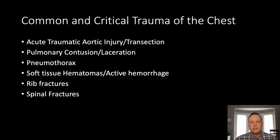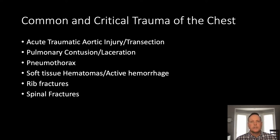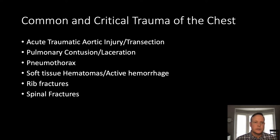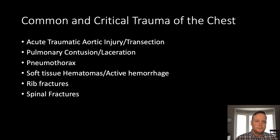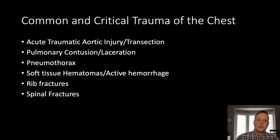For assessing the chest for trauma, it is essentially an anatomic review with an expectation that any structure in the chest could be injured. So you have to have a high level of clinical suspicion and really be meticulous in your anatomic survey. I'm going to be showing some of the more common manifestations of trauma, as well as some critical injuries: acute traumatic aortic injury, pulmonary contusion, laceration, pneumothorax, soft tissue hematoma with active hemorrhage, rib fractures, and spinal fractures.